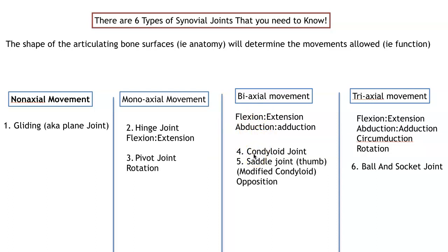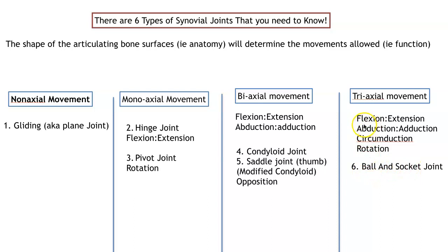Our fourth synovial joint is a condyloid joint, also known as an ellipsoidal joint. It allows movement in two planes — two axes — permitting flexion, extension, and abduction and adduction. The saddle joint, the thumb joint, is a modified condyloid joint allowing flexion, extension, abduction, adduction, and also opposition. Our last type of synovial joint is the ball and socket joint, which has movements in all three dimensions: flexion, extension, abduction and adduction, circumduction, and rotation.